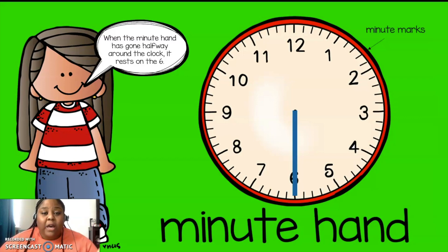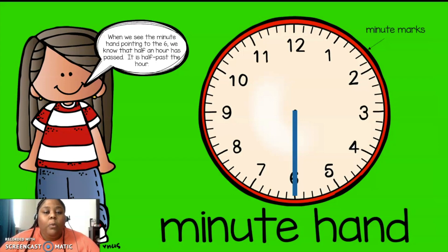So when it starts at the 12, it's o'clock. And when it's going to go all the way around, halfway around the clock, and sit on the 6. When we see the minute hand pointing to the 6, we know that half an hour has passed. It is called half past the hour.